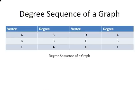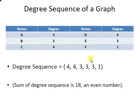So the degree sequence of a graph - those are all the vertices and those are the corresponding degrees. So the degree sequence of a graph is these degree values in descending order. So we have four, four, three, three, three, and one.